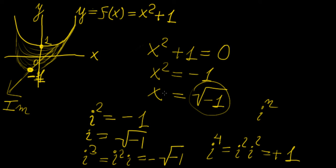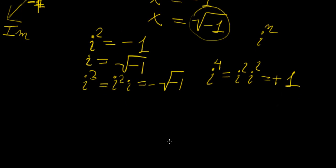Now that we have invented a new kind of numbers, we're going to call them the complex numbers. A complex number is going to have both a real part and an imaginary part. We use the notation z to mean a complex number. A complex number has two parts: a real part, which is any number that pertains to the real numbers, and an imaginary part, which is a real number b attached to the imaginary unit i that we have just defined.